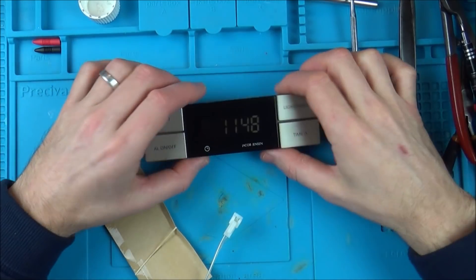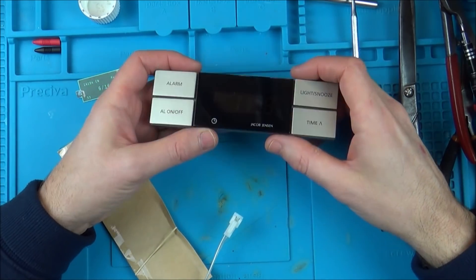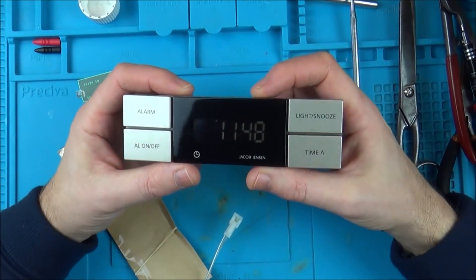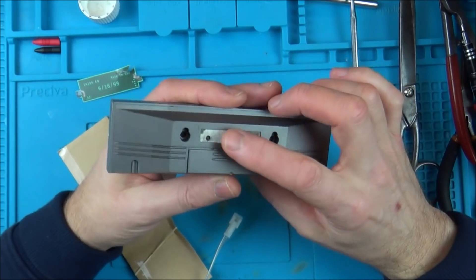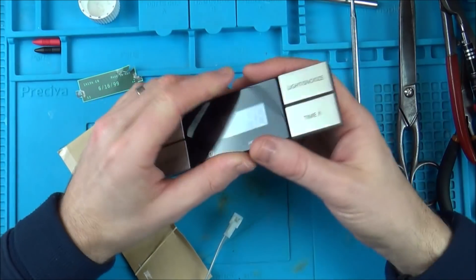Hi there, my name is Vince from mymatevince.com and in this video today is a revisit of a revisit of a Jacob Jensen alarm clock. First of all, the problem was that you couldn't set it so it was absolutely useless.